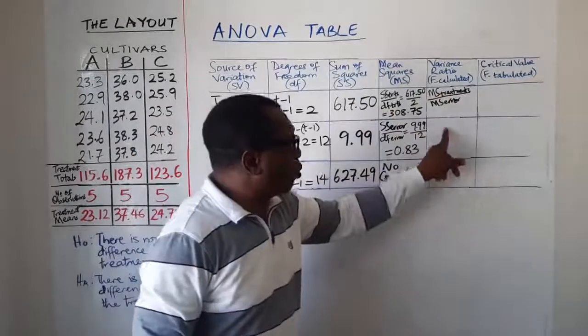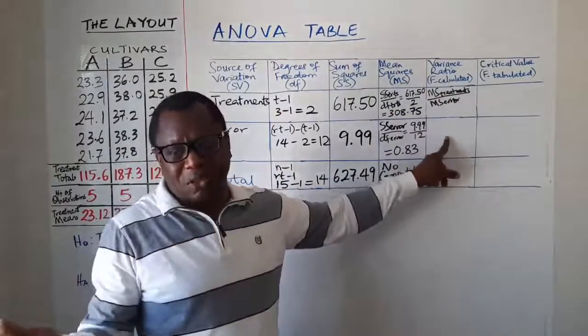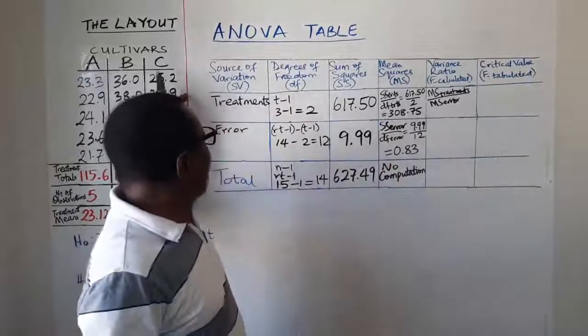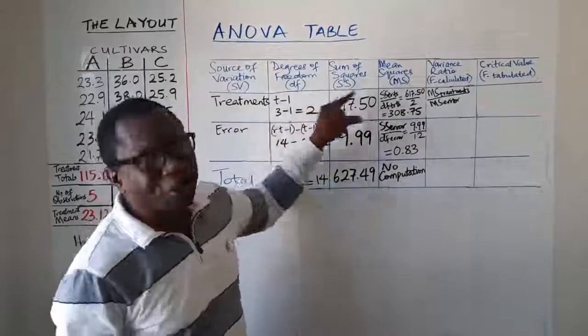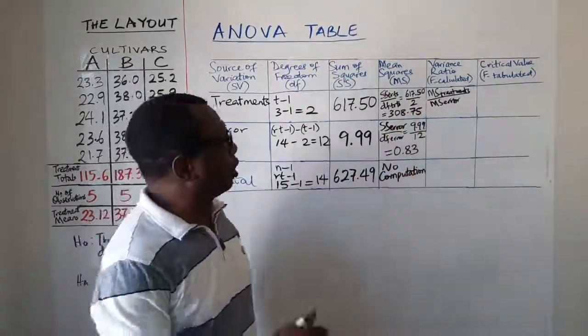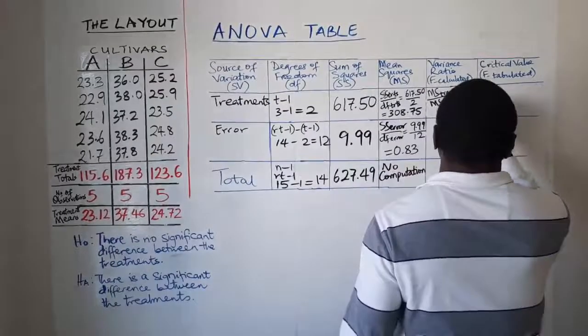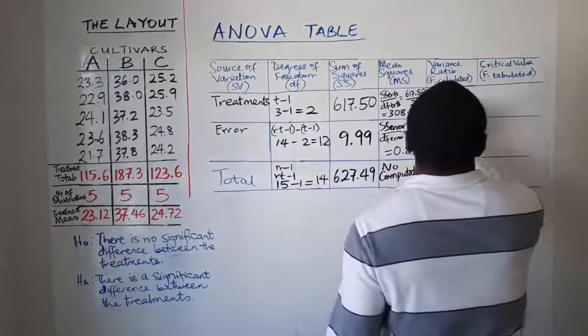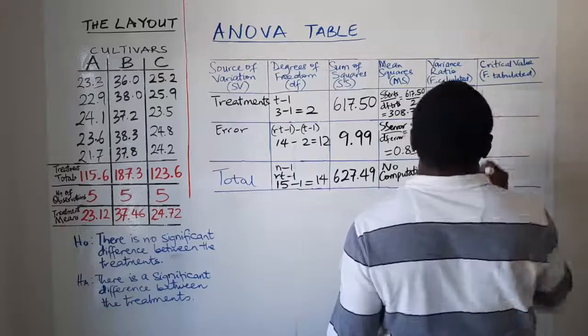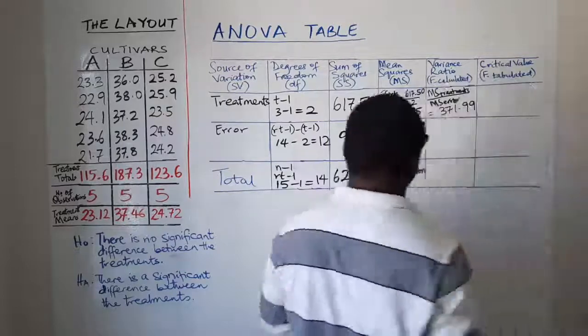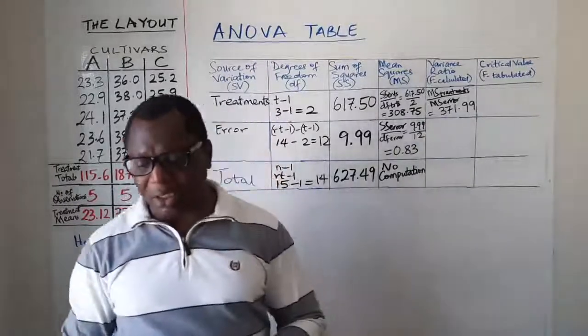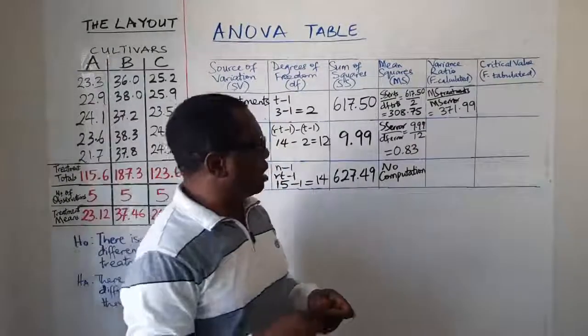And because treatment is the only source of variation here, it is the only item for which we will compute F calculated. We don't compute F calculated for error because that's not a source of variation. The recognized source of variation in this exercise is variation due to treatments. And that's the only one for which we will compute variance ratio. And this will be equal to 371.99. If you divide that out, you'll get 371.99.